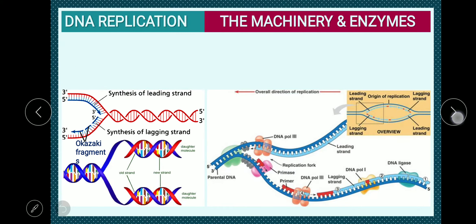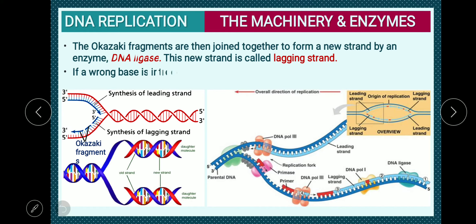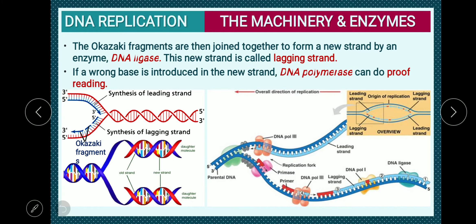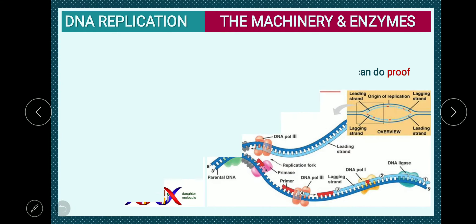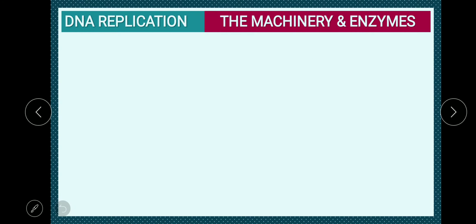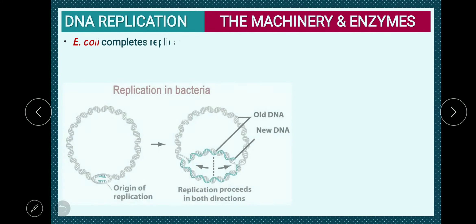The Okazaki fragments are then joined together by the enzyme DNA ligase to form a new strand called the lagging strand. If a wrong base is introduced into the new strand, DNA polymerase can proofread. This proofreading helps in the removal of any wrong nucleotides that have been added.